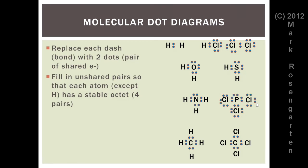In the case of methane, the carbon already has four shared pairs and cannot have any more, and the hydrogens can't have more than two. In carbon tetrachloride, the carbon also has four shared pairs, but each chlorine only has one shared pair, so each chlorine needs three more unshared pairs to make a stable octet.